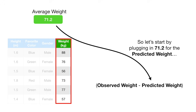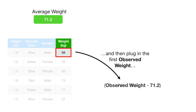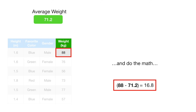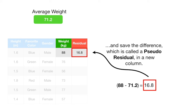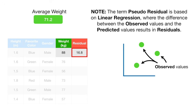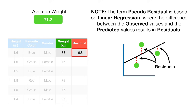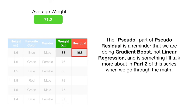So let's start by plugging in 71.2 for the predicted weight, then plug in the first observed weight and do the math. We save the difference, which is called a pseudo-residual, in a new column. Note: the term pseudo-residual is based on linear regression, where the difference between the observed values and the predicted values results in residuals. The 'pseudo' part of pseudo-residual is a reminder that we are doing Gradient Boost, not linear regression — something I'll talk more about in Part 2 when we go through the math.